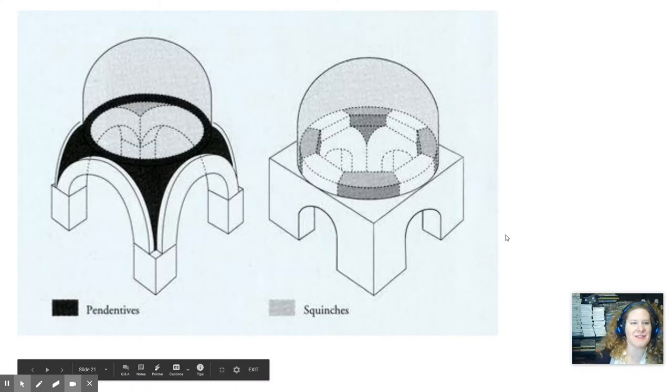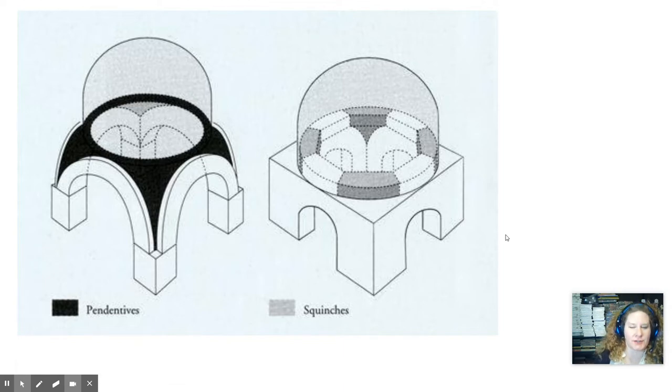Okay, need to talk about pendentives versus squinches. I mentioned squinches before when it came to San Vitale, which is also another Byzantine church that was sponsored by Justinian, although San Vitale is in Ravenna, Italy, and Justinian never set foot there. But squinches were a solution for how to put a circle, you know, a dome which is essentially circular, onto a square.